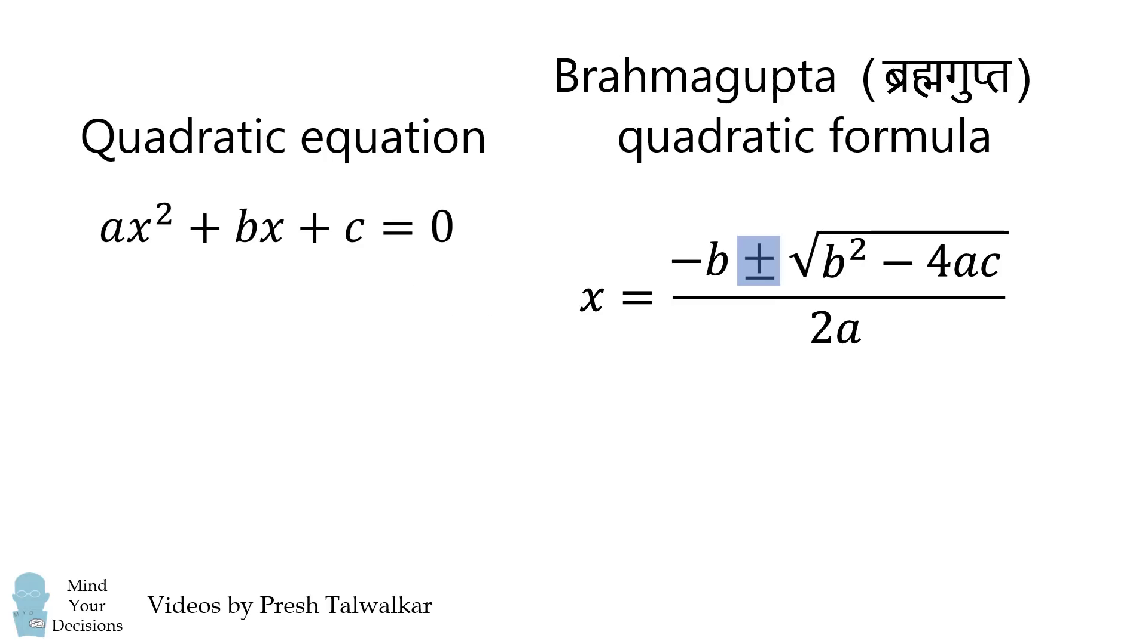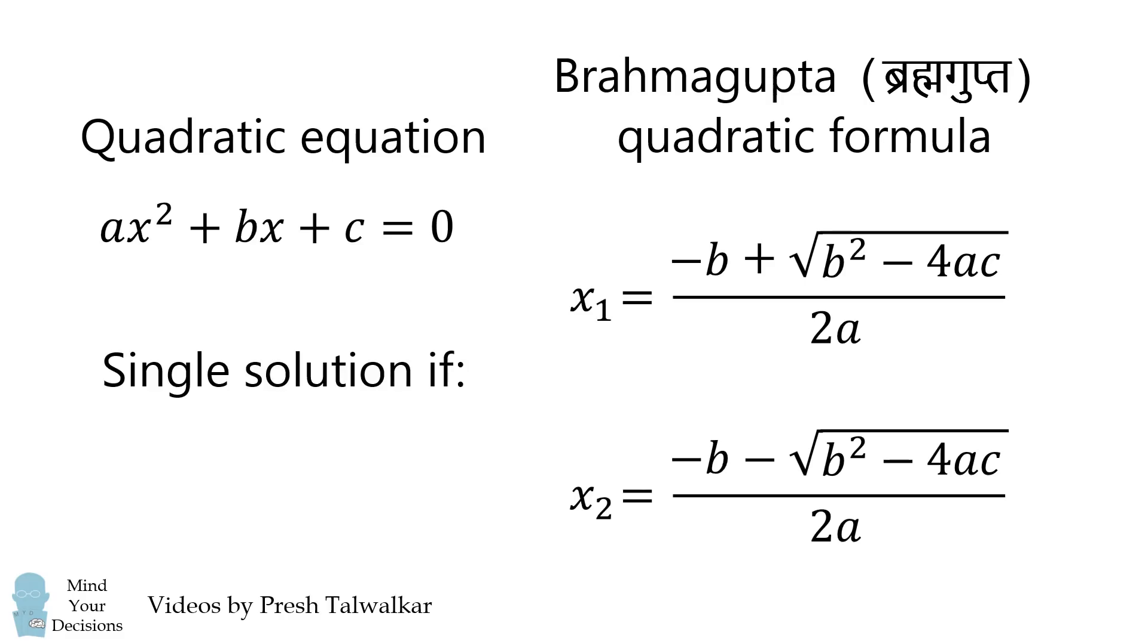This formula represents two different solutions. We'll separate them out into x1 and x2. We'll get a single solution if the discriminant b² - 4ac is equal to 0.